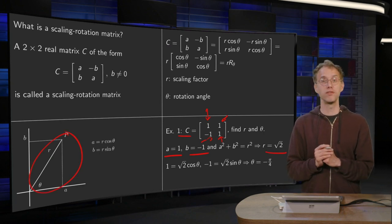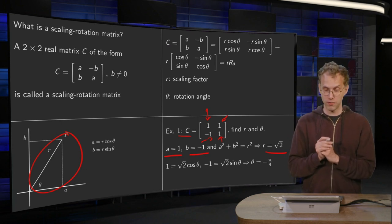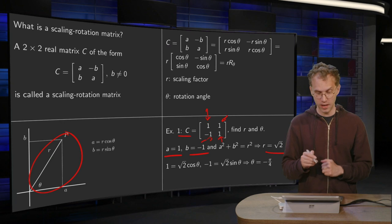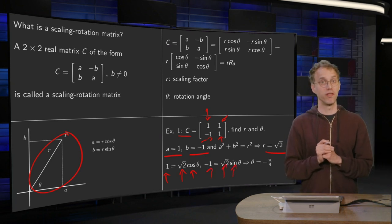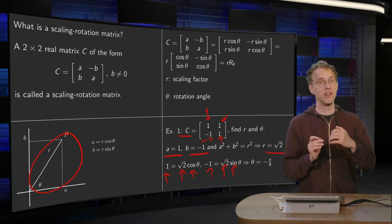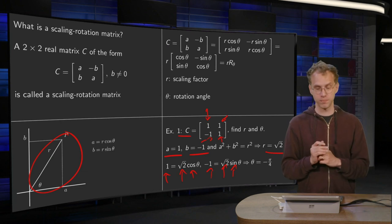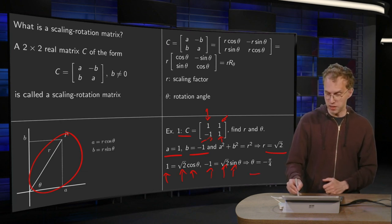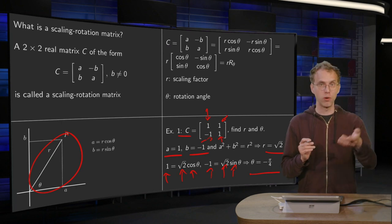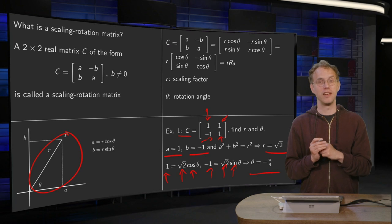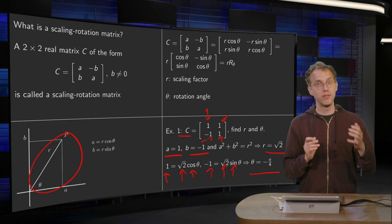And then you see immediately r equals square root of 2. So we have a scaling factor of square root of 2. And then we determine θ. We plug in a equals r cosine θ and b equals r sine θ, and we can solve for θ. From the first equation you see that we have θ equals π/4 or minus π/4. And using the second equation we see that we have θ equals minus π/4. We always pick our θ's between minus π and π. Of course you could add factors of 2π but that doesn't do anything, it just rotates everything along the entire circle. So when picking θ's we always pick them for our scaling-rotation matrices between minus π and π. And in this specific example we found θ equals minus π/4.